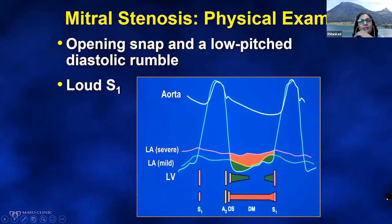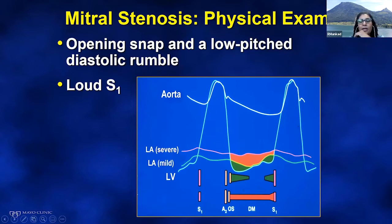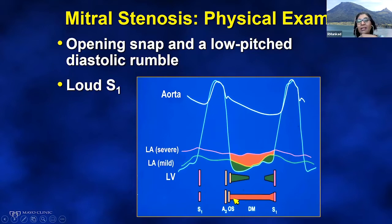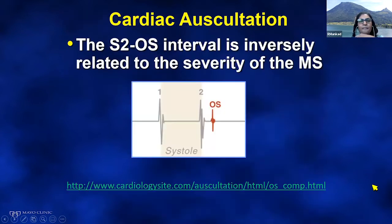The classic physical exam in mitral stenosis — important for board questions — includes recognizing the opening snap and low-pitch diastolic rumble. The first heart sound can be loud, although as severity progresses, S1 can actually get soft. As mitral stenosis becomes more severe, left atrial pressure is higher, causing the diastolic rumble to extend throughout diastole and the opening snap gets closer to the second heart sound. The opening snap can actually disappear in really severe mitral stenosis.